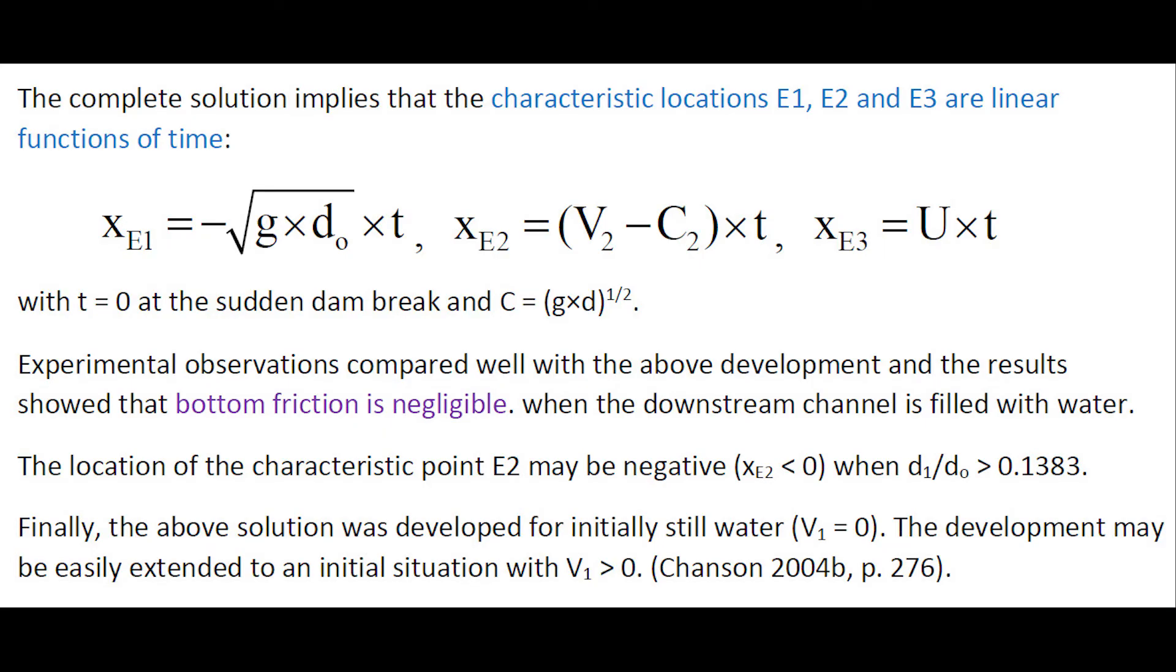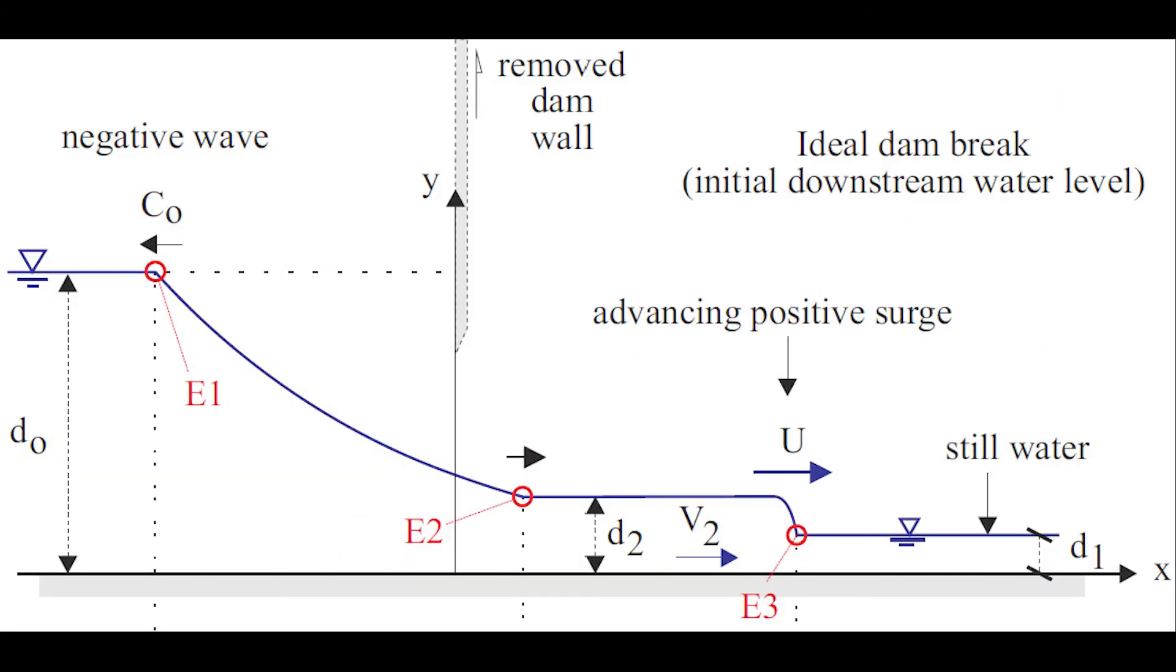The complete solution implies that the location of the characteristic locations E1, E2, E3 are a linear function of time.